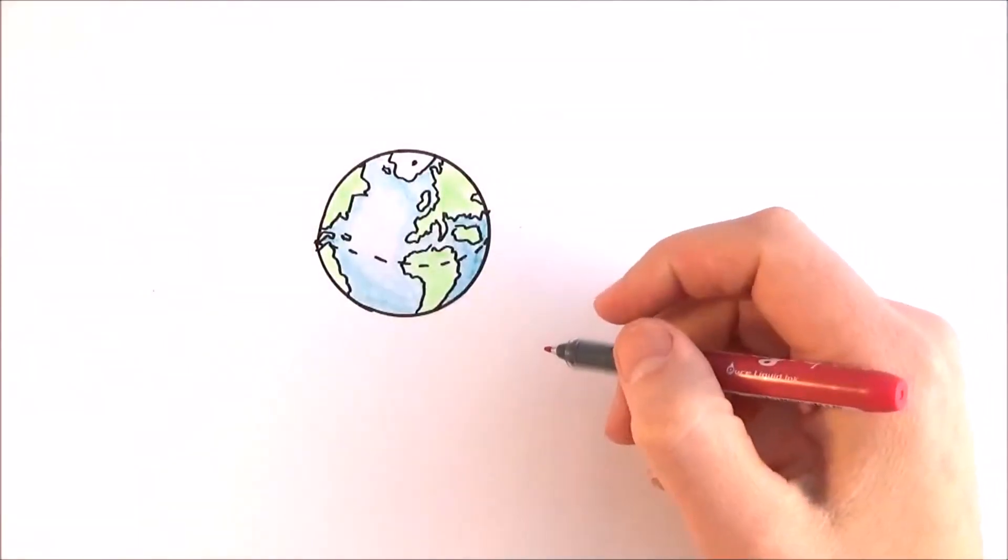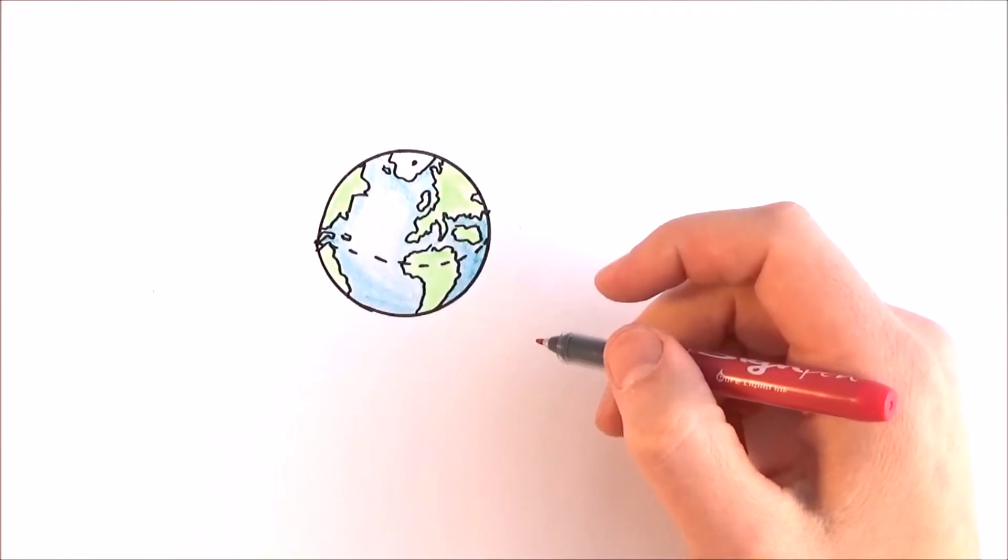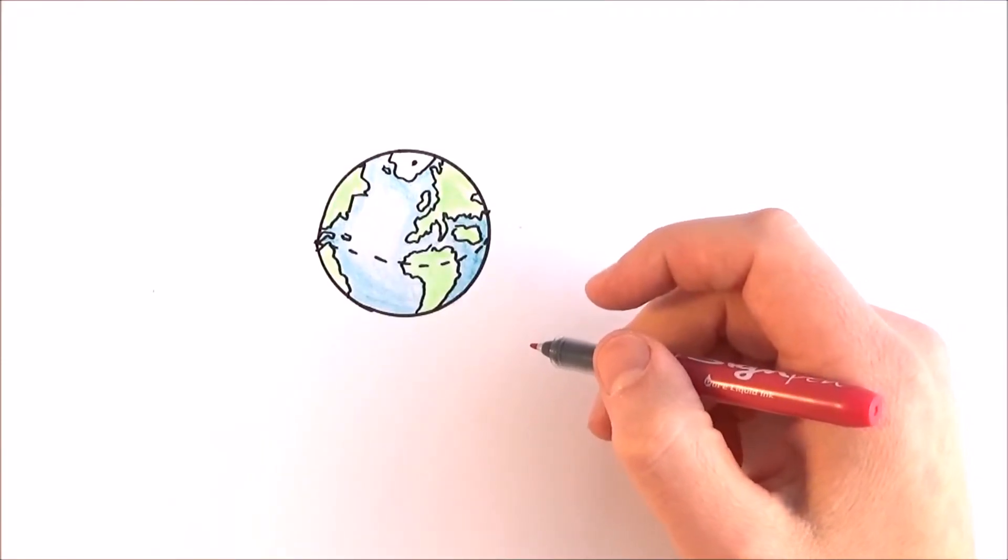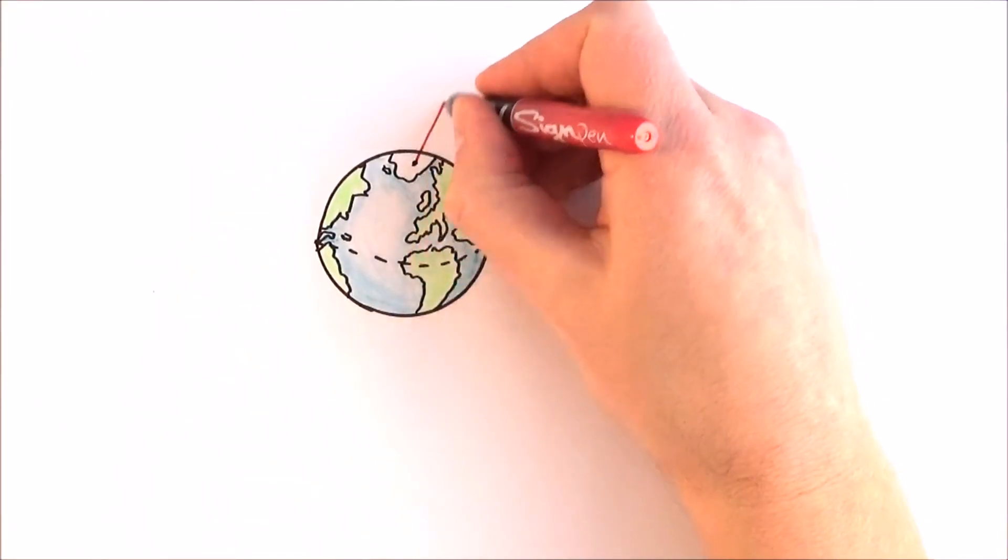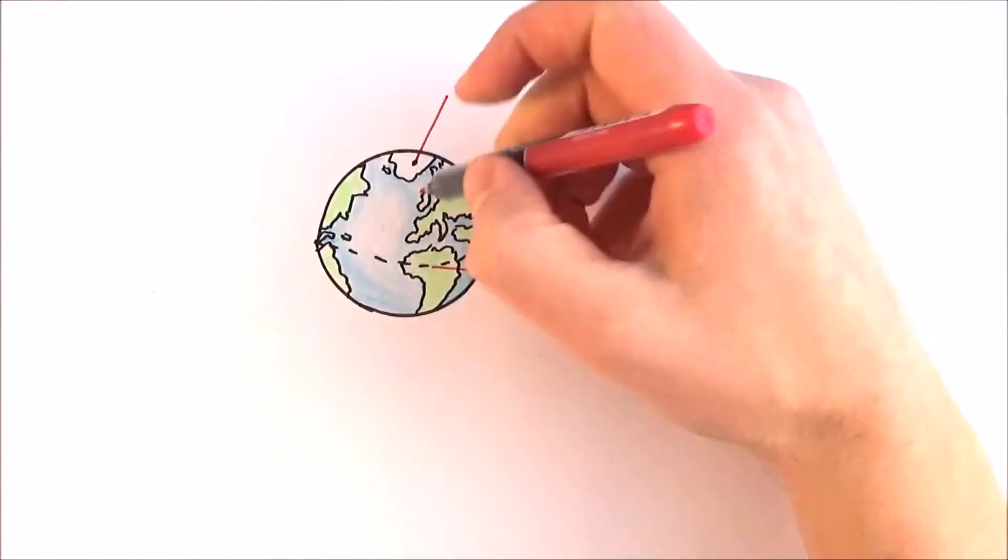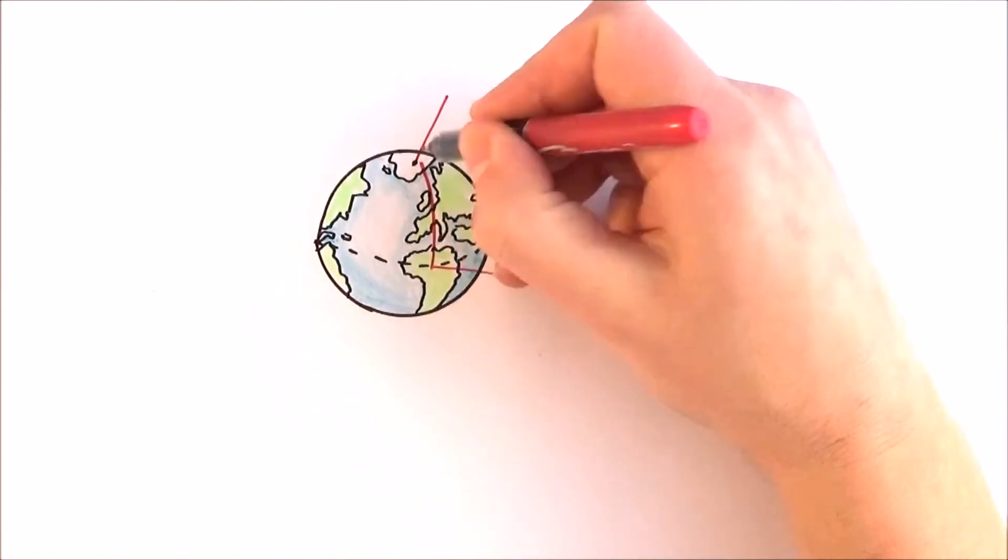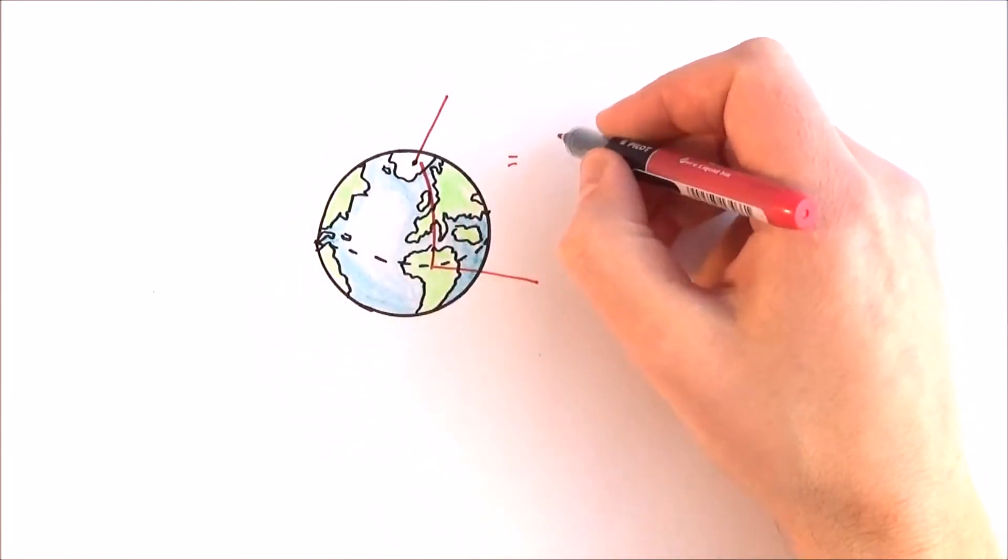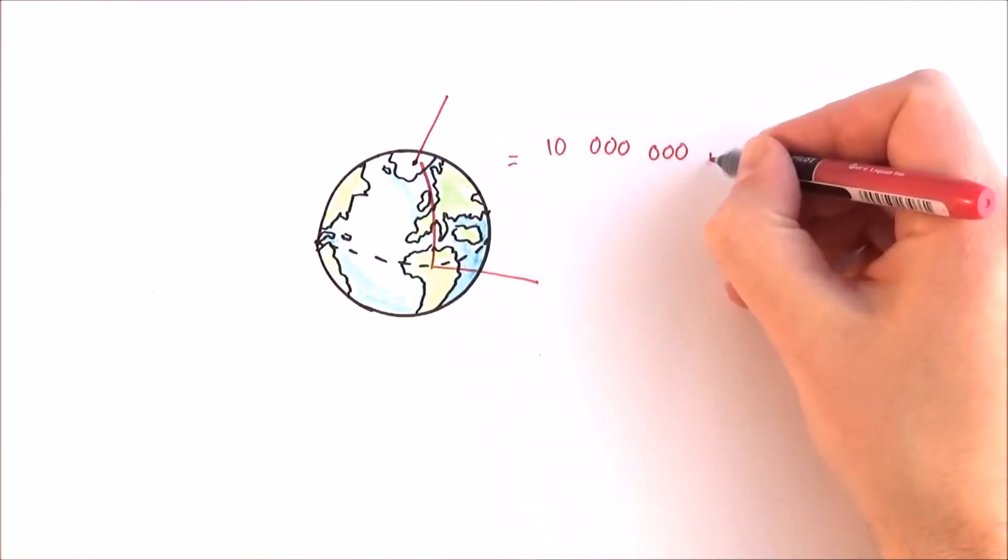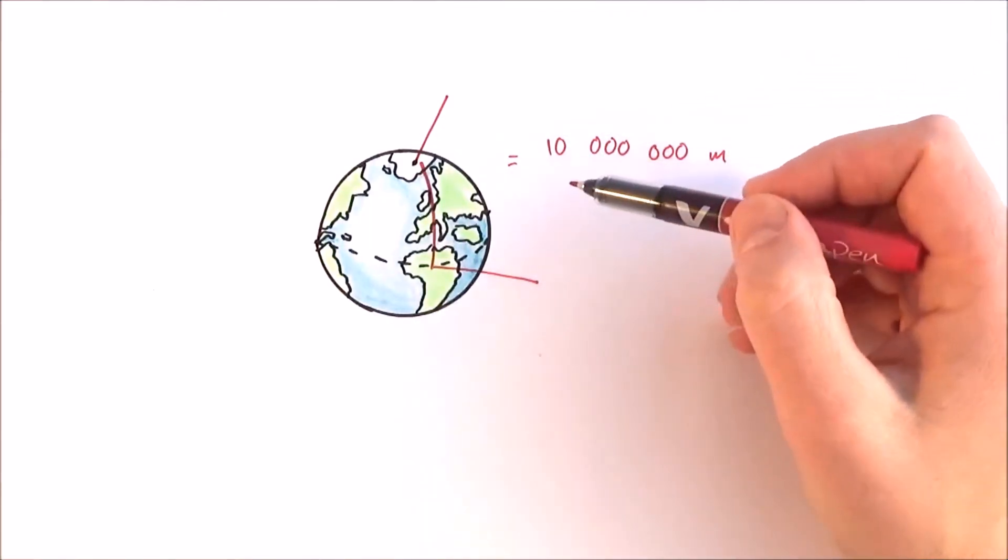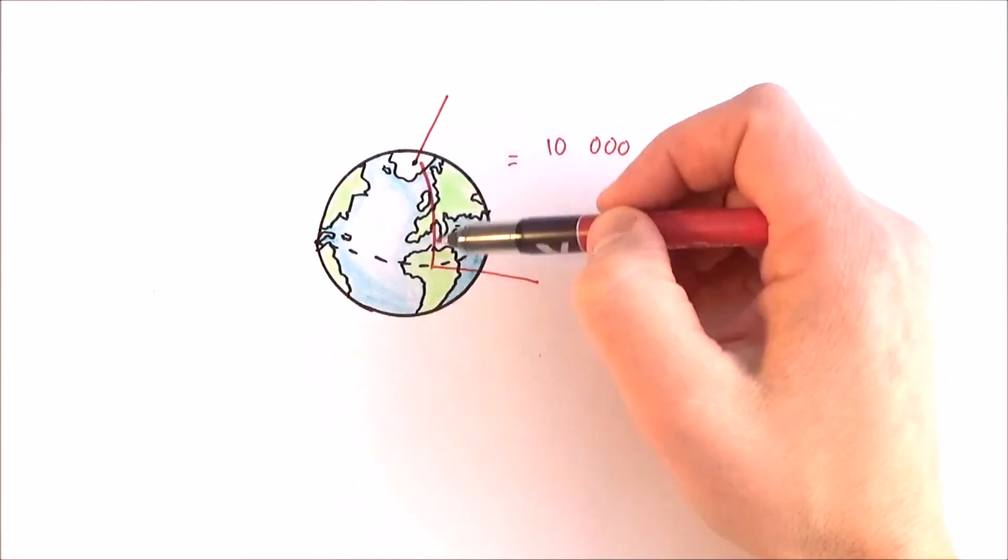So where do these come from? Why is one metre one metre? Well, historically, they used various distances. A long time ago, they said the distance from the North Pole to the equator on a line running through Paris was equal to 10 million metres. So one metre is one ten-millionth of the distance between the North Pole and the equator.